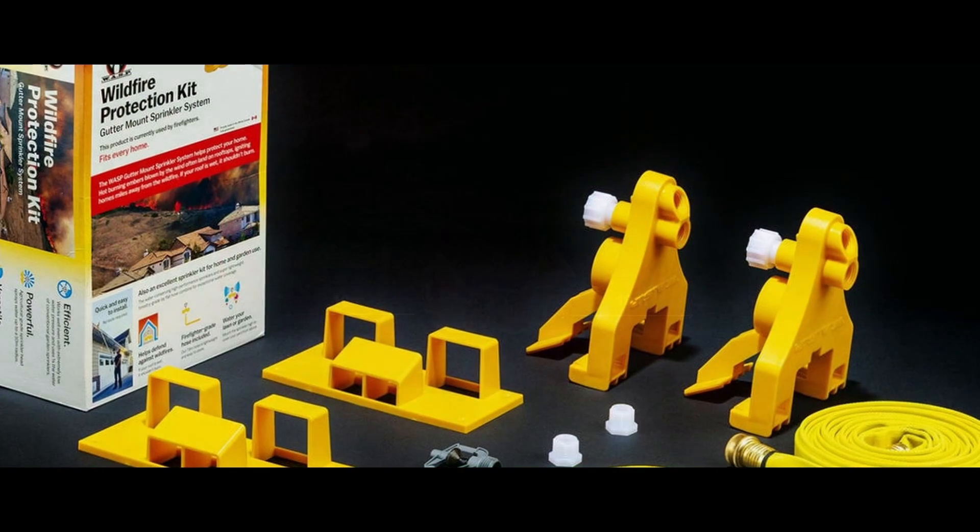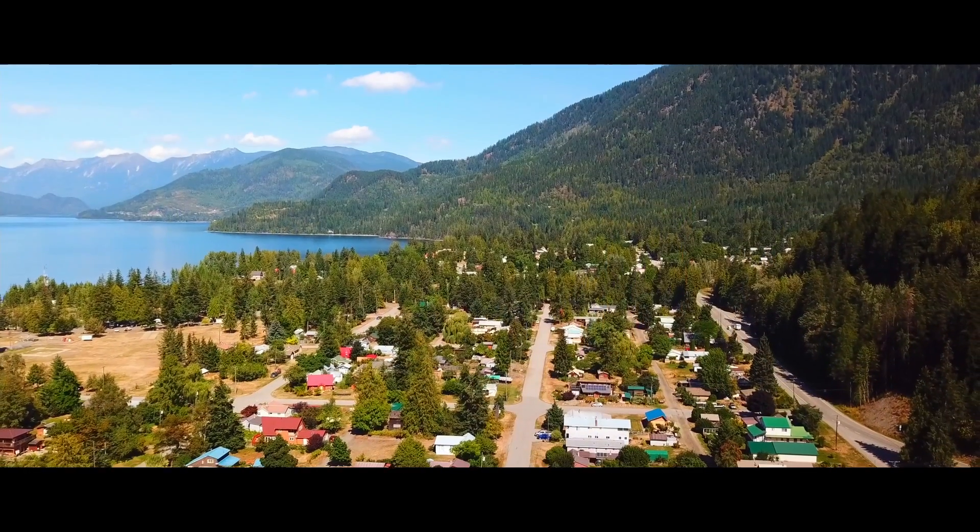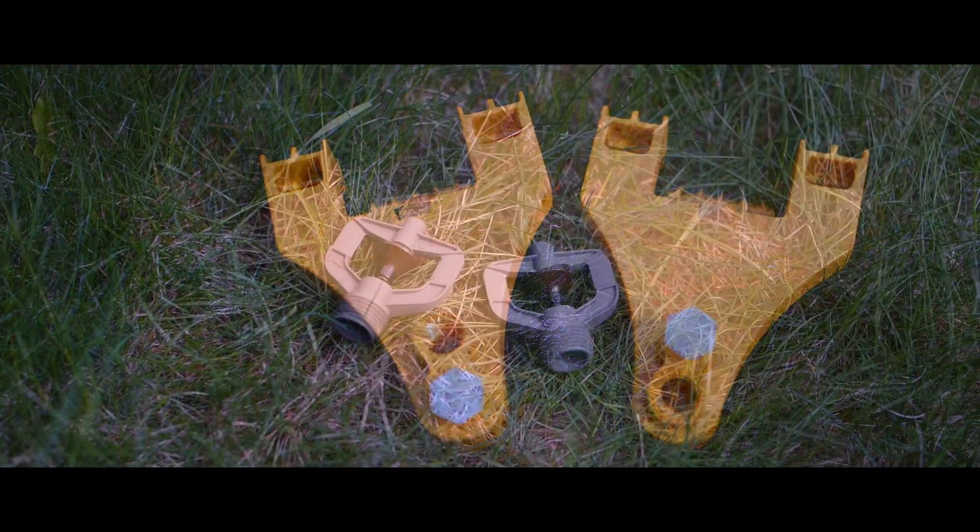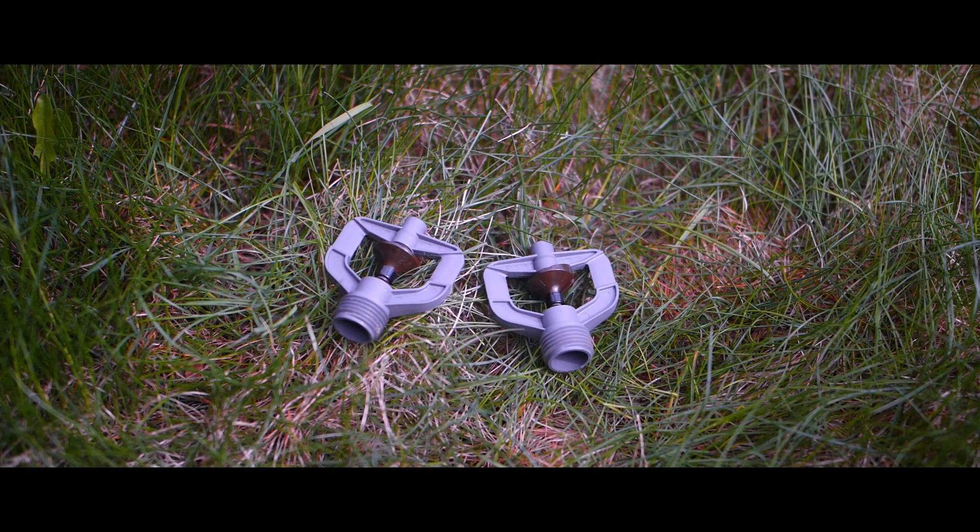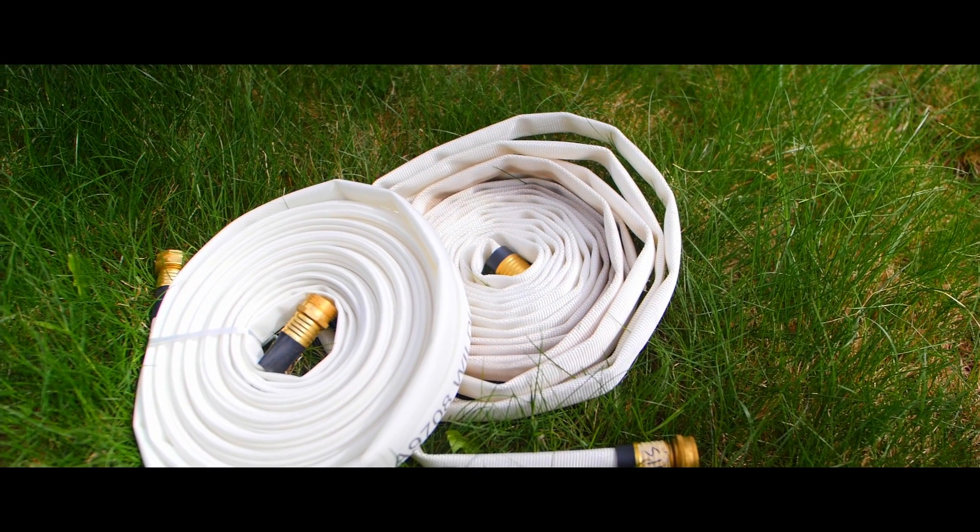Each WASP be-gutter mount sprinkler system kit includes everything needed to help protect a standard home: two patented sprinkler brackets, two high quality agricultural grade sprinkler heads, and two sets of forestry grade lay flat hose in 25 foot length.